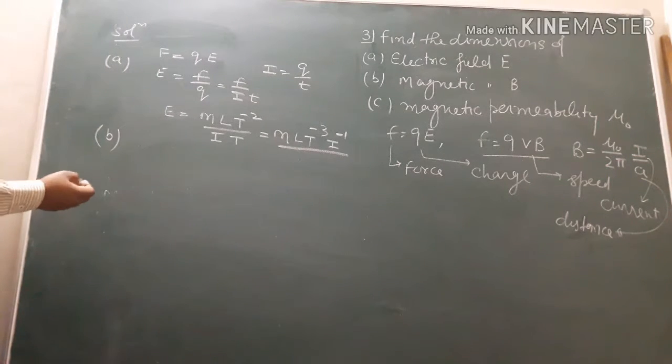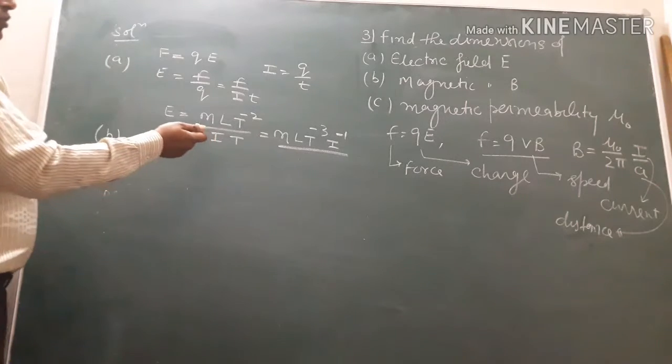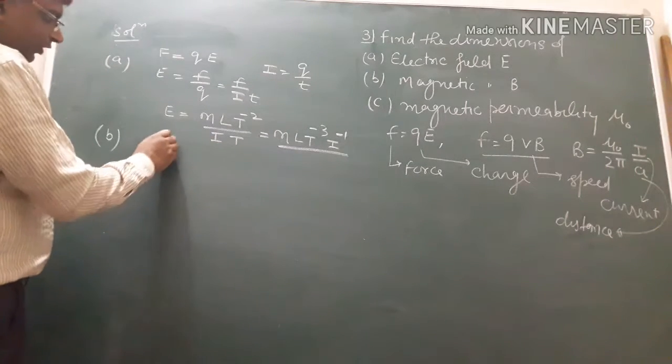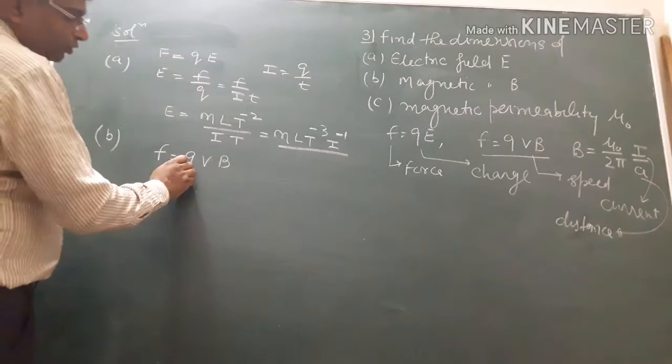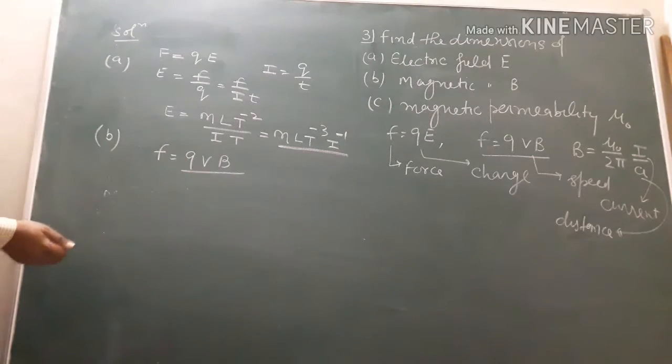For magnetic field, the related formula is force equals q v B, where q is moving charge and B is magnetic field.